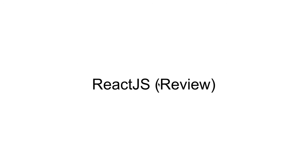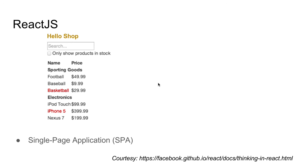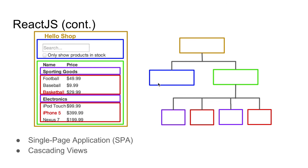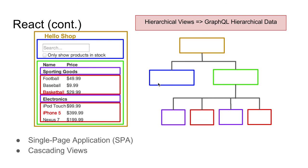Before we proceed to RelayJS, let's do a review of ReactJS. This is an example from the popular 'Thinking in React' tutorial by Pete Hunt. When you design a ReactJS page, you usually break it down into components. If you redraw the components, it actually looks like a hierarchy — the brown component contains the blue and the green, and the green contains the purple and the red. This is one of the reasons why GraphQL is hierarchical, so that it can match the React component structure.